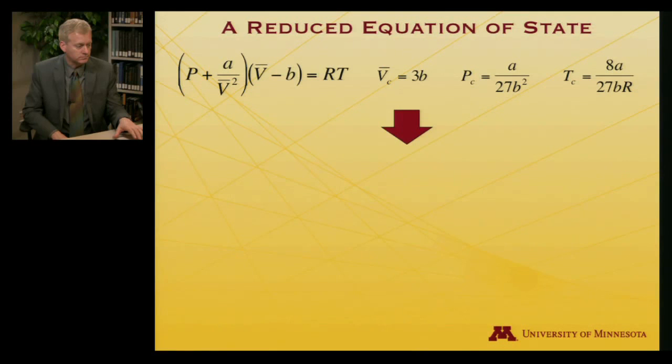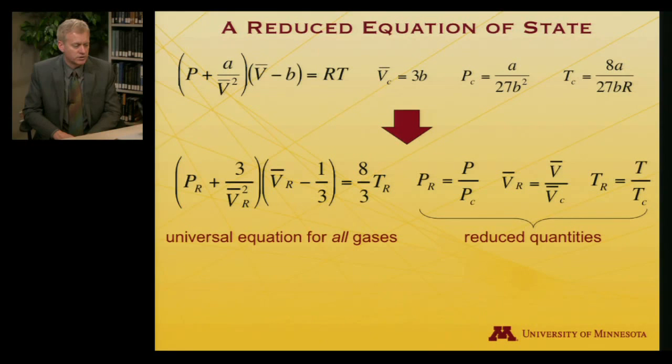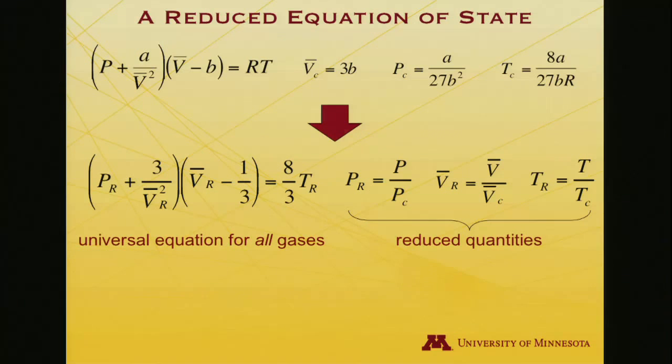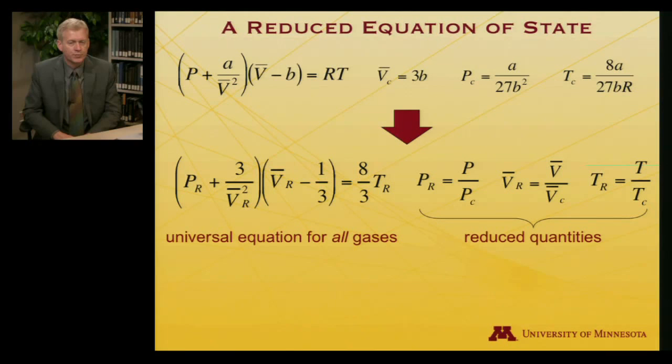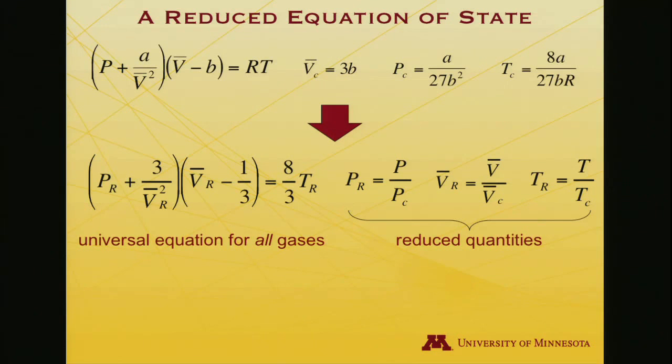So instead of using pressure, I'm going to use pressure divided by critical pressure, and I'll use molar volume divided by critical molar volume. These are, of course, measurable quantities. They're just numbers, the critical pressure and the critical molar volume. Once I've measured them and have written them down in a table somewhere, I'll just be dividing by some constant value.